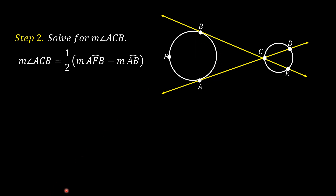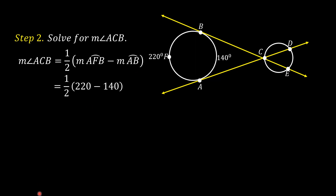Arc AFB is equal to 220 degrees and arc AB is equal to 140 degrees, as found in step one. Substituting 220 degrees for arc AFB and 140 degrees for arc AB, we have one-half times the quantity 220 minus 140. This is equal to one-half of 80, and one-half of 80 is equal to 40. So, the measure of angle ACB is equal to 40 degrees.